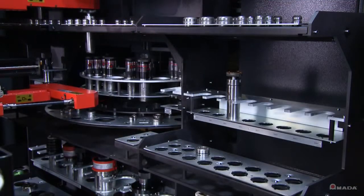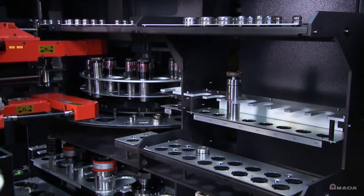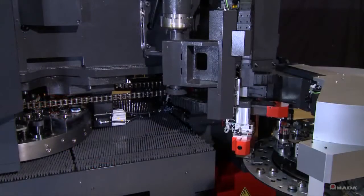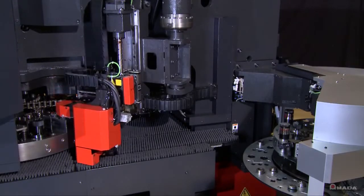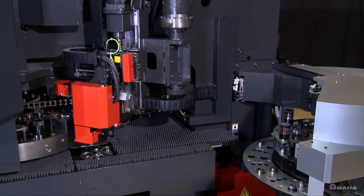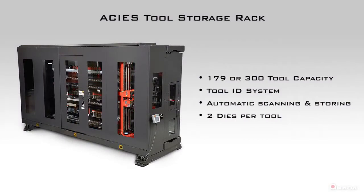While the machine is punching, tools are staged on the buffer turret. Once the machine is ready to use those tools, they are automatically exchanged, even during laser cutting. This tool storage rack allows the AKIA to maximize efficiency and minimize downtime.